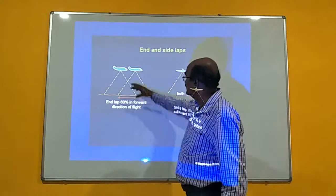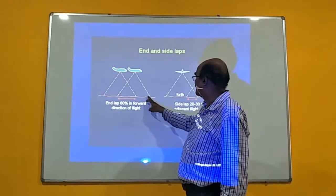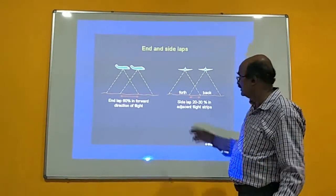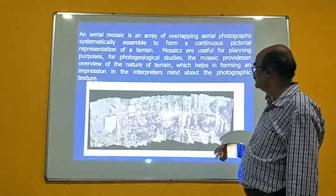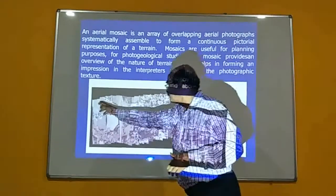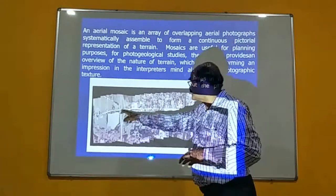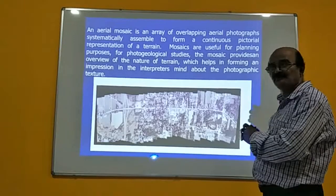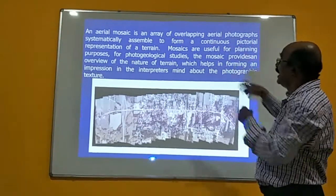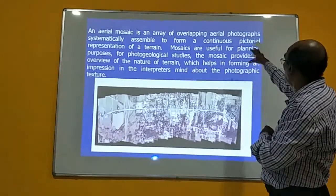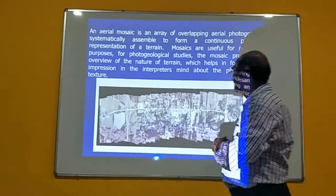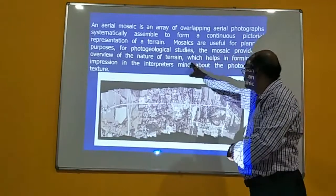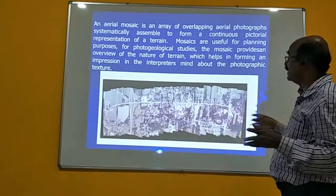The forward overlap area is common in both photographs, and the side-lap between strips is required to compile a mosaic. An aerial mosaic is a group of overlapping aerial photographs which are systematically assembled to give a continuous pictorial representation of a terrain. Mosaics are useful for planning purposes, photo-geological studies, and providing an overview of terrain nature, helping the interpreter form an impression of photographic texture.